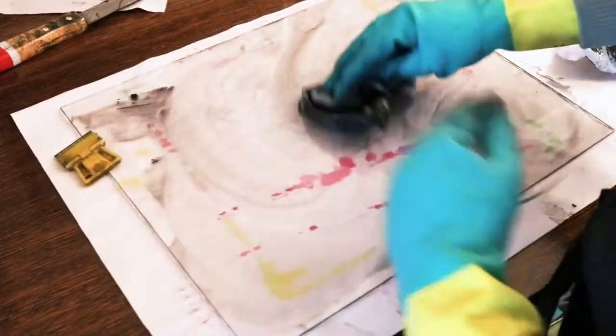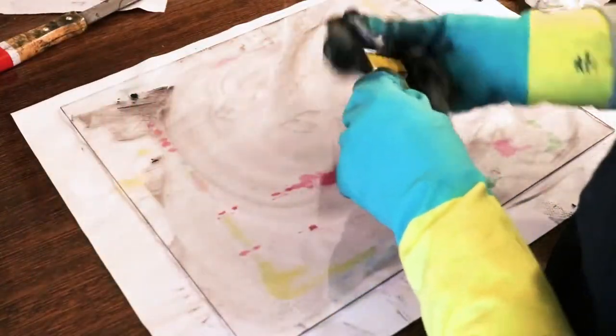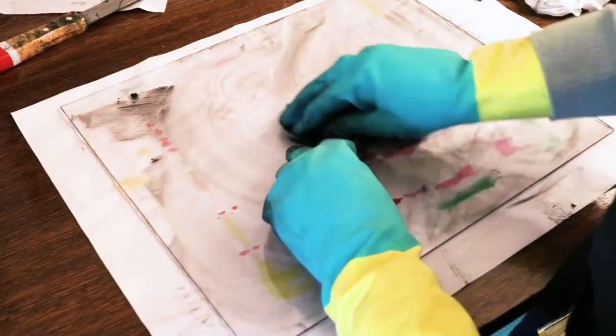When you're done cleaning your tools you can use your rag and solvent to wipe away any ink left on your slab. Go over it one final time with a clean cloth or paper towel and you're done.